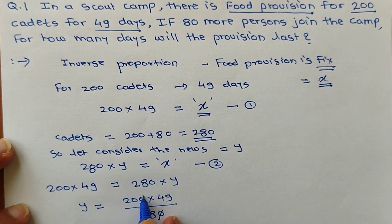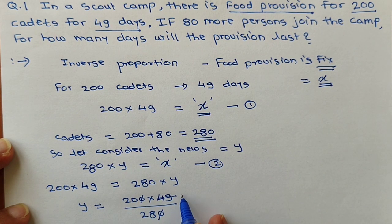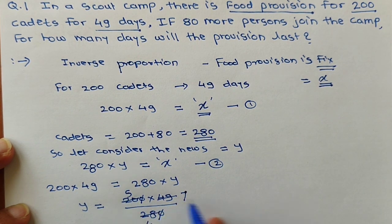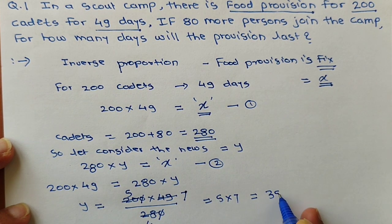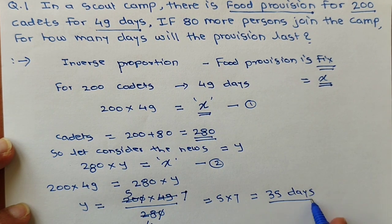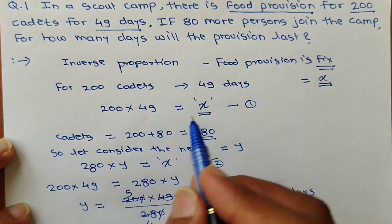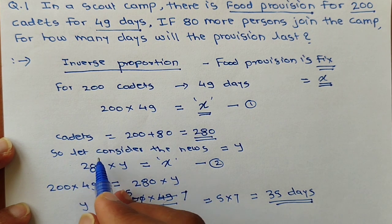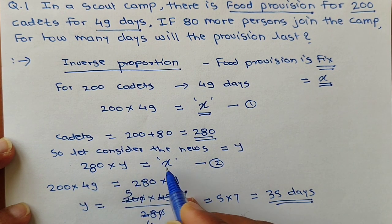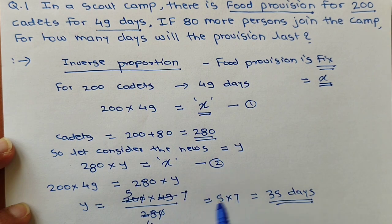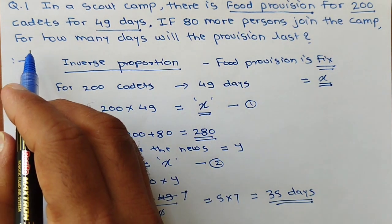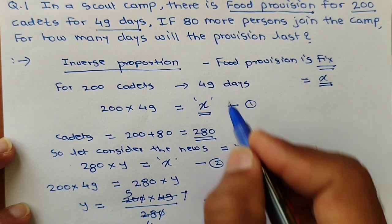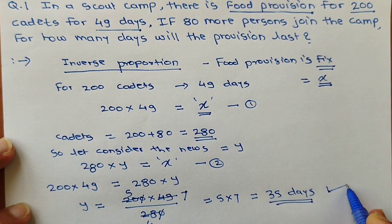Simplifying: the zeros cancel, and 49 divided by 28 gives 7 divided by 4, then multiplying by 5 gives 35. So y equals 35 days. The provision will last for 35 days. That is our final answer.